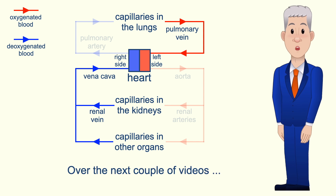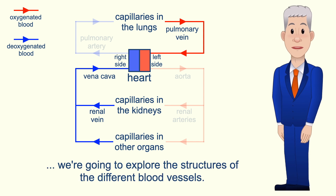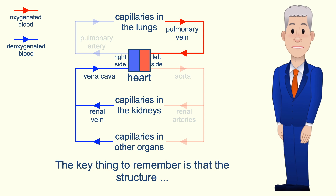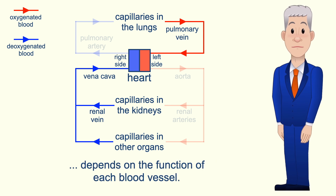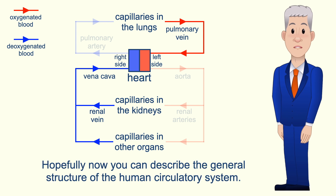Over the next couple of videos we're going to explore the structures of the different blood vessels, and the key thing to remember is that the structure depends on the function of each blood vessel. Hopefully now you can describe the general structure of the human circulatory system.